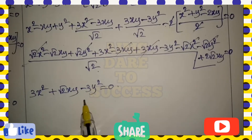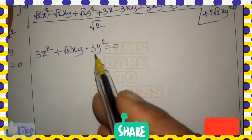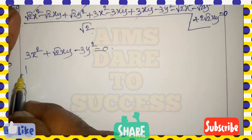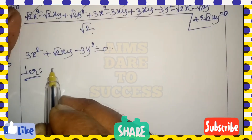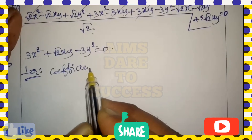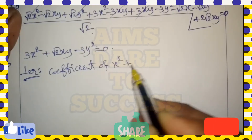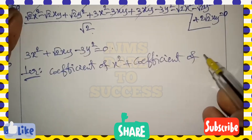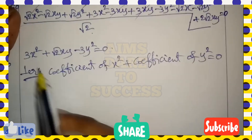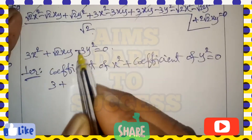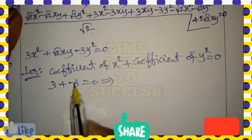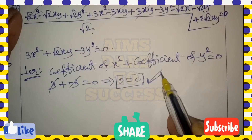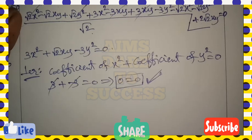According to the question, the lines are mutually perpendicular. The perpendicularity condition is: coefficient of x² + coefficient of y² = 0. Here, coefficient of x² is 3 and coefficient of y² is -3. So 3 + (-3) = 0, which gives 0 = 0. This confirms the result. Please subscribe, support, share, like, and comment.